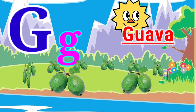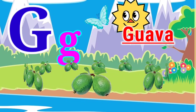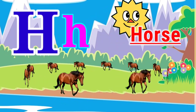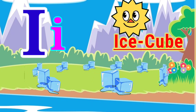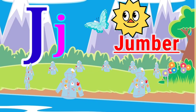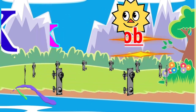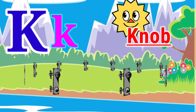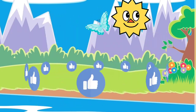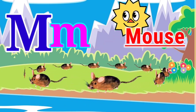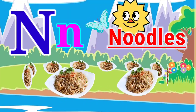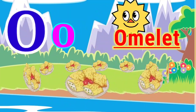G for guava. H for horse. I for ice cube. J for jambar. K for knob. L for light. M for mouse. N for noodles.